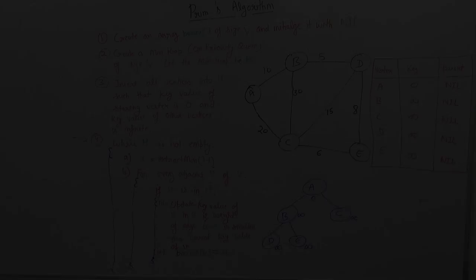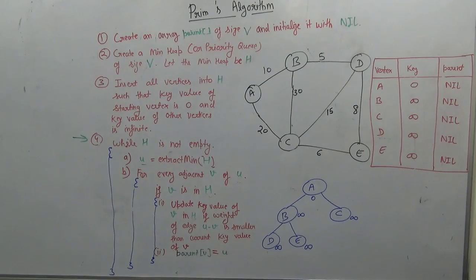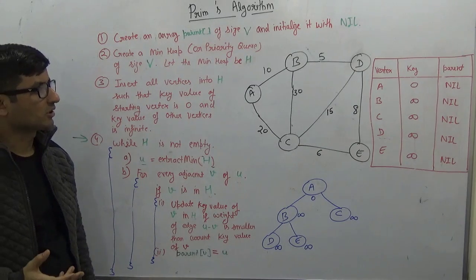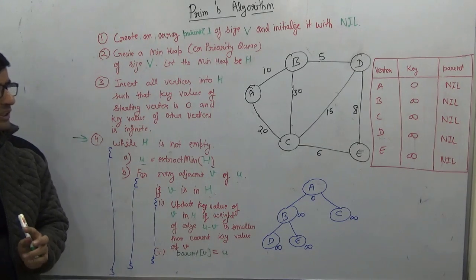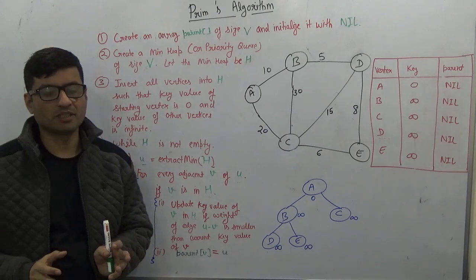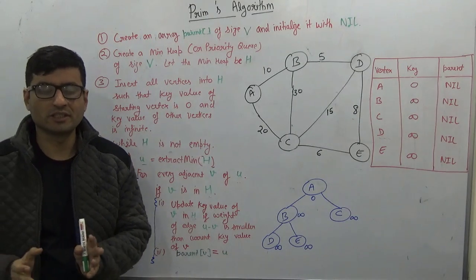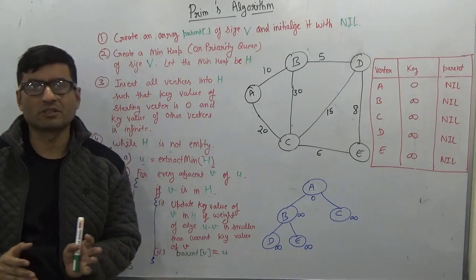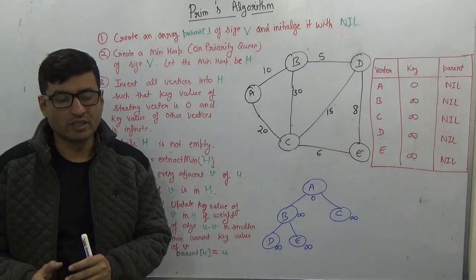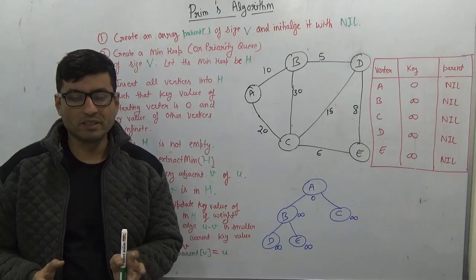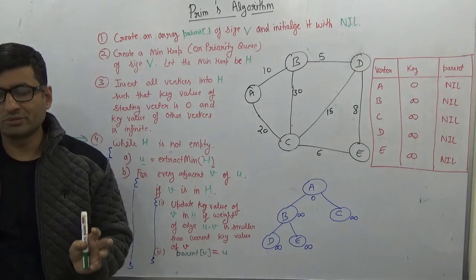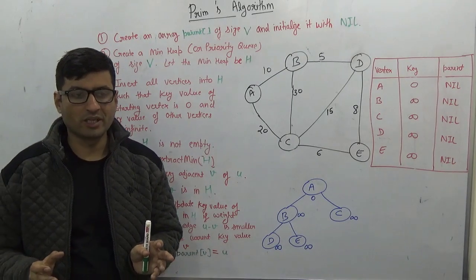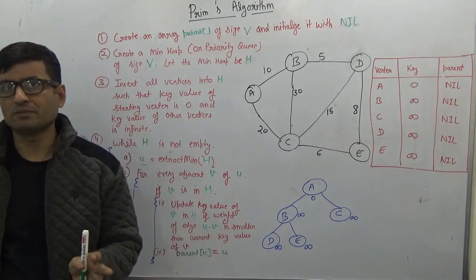So that will be all for the walkthrough. We discussed an overview of Prim's algorithm. We basically maintained two sets: one containing vertices included in the MST, and the other containing vertices yet to be included. At every step, we considered all edges connecting these two sets and took the minimum weight edge as part of the MST.